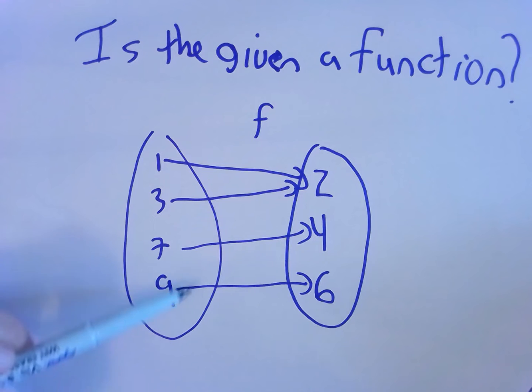Here are my inputs, my domain. Does every one of these have exactly one line coming off of it? Yes. Now, two different inputs have the same output, we don't care about that.